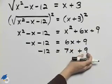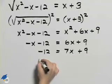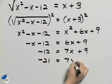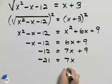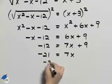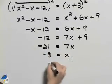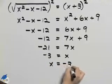Then finally I'll subtract 9 from both sides. So I'll have negative 21 is equal to 7x. Dividing both sides by 7 will give us negative 3 equal to x or x equals negative 3.